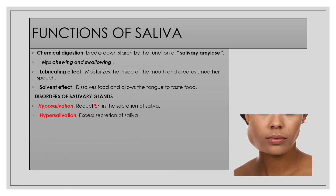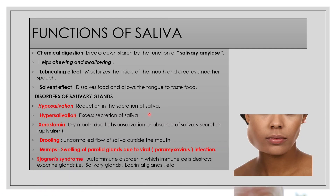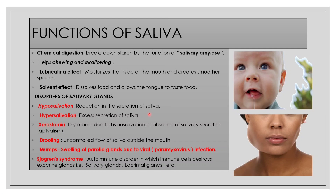Various disorders associated with the salivary glands include hyposalivation, which means reduction in the secretion of saliva; hypersalivation, which is excess secretion of saliva; xerostomia, which represents the dry mouth condition; drooling, meaning the uncontrolled flow of saliva outside the mouth; and mumps, which means the swollen parotid gland, caused by viral infection of paramyxovirus.